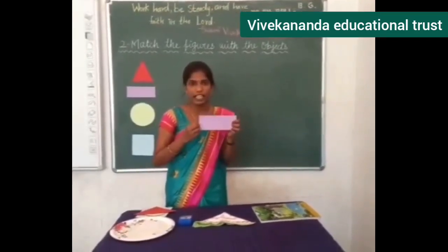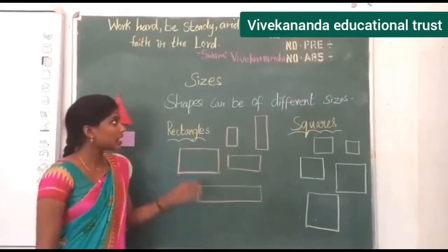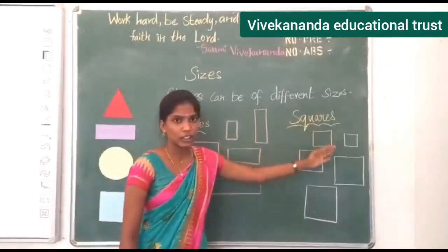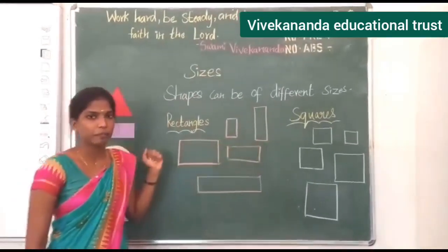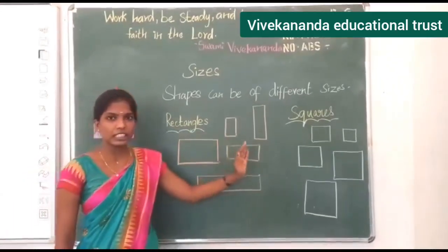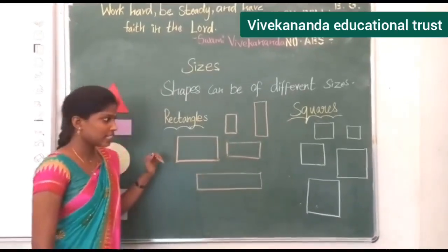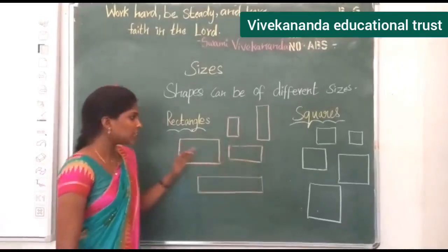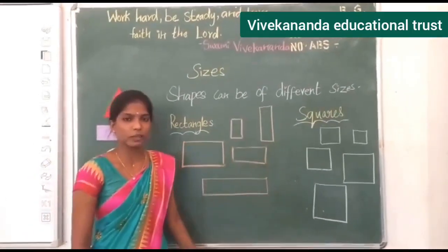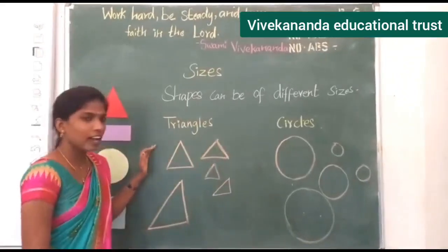You will never forget the shapes. Next, let's see the sizes. What shapes are these? Rectangles and squares. Observe these two shapes — what difference can you find? Shapes can be of different sizes: someone is big, someone is small, and someone is too small. Shapes can be of different sizes. Observe these triangles and circles — these are also in different sizes.